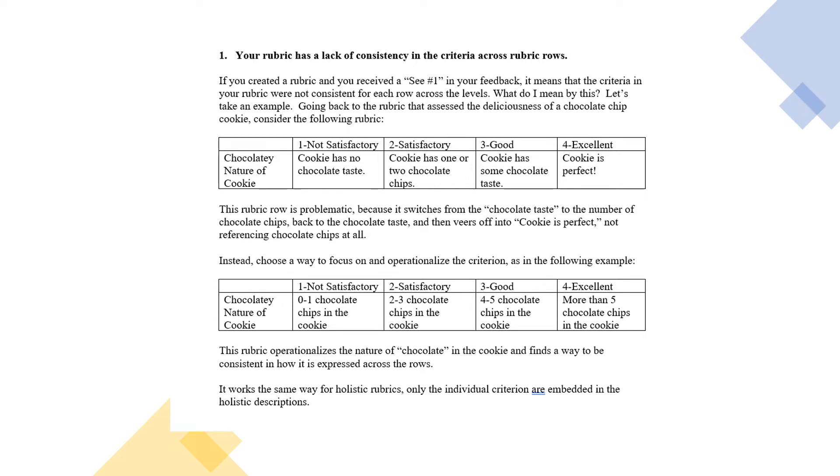Instead, it's better to try to find an objective measure. Look at the bottom where I've corrected it. Now chocolatey nature of the cookie is measured by the number of chocolate chips in the cookie. Zero to one, two to three, four to five, more than five. Notice that's a very objective way to measure the chocolatey nature of the cookie.